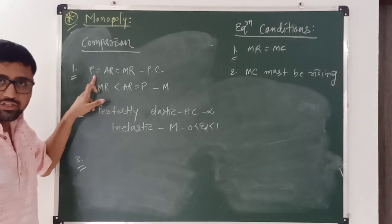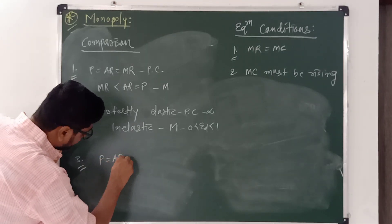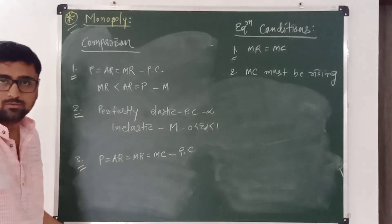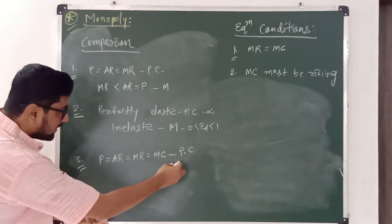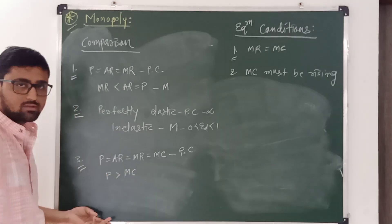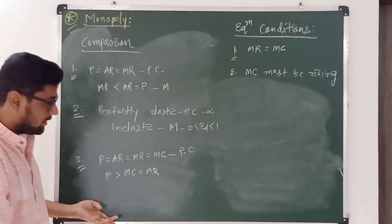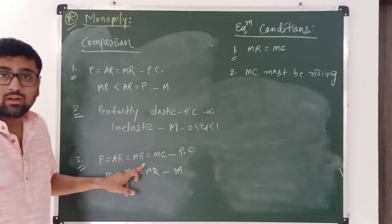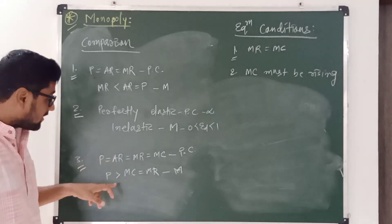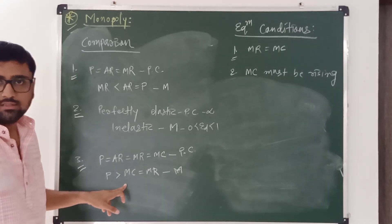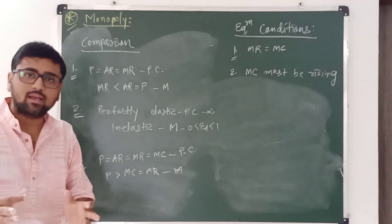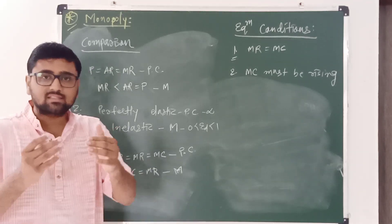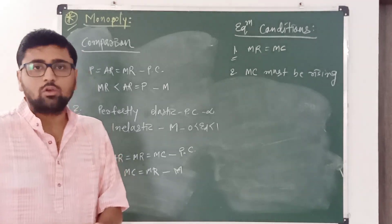Third, in perfect competition at the equilibrium point, P equals AR equals MR equals MC. In monopoly, the price is greater than marginal cost, which means there is no consumer exploitation in the perfectly competitive market, but consumer exploitation is highest in a monopoly structure. Monopoly price is the highest possible price, while perfectly competitive price is the lowest possible price — price cannot fall below the perfectly competitive level and cannot rise above the monopoly price.